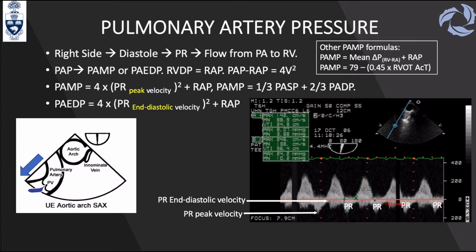Other formulas described for pulmonary artery mean pressure include: mean pressure from the difference between RV and RA pressure plus right atrial pressure, and 79 − 0.45 × RVOT acceleration time. These require memorization, but using the Bernoulli equation with the PR jet, you can derive the PA pressures without needing to memorize those formulas.